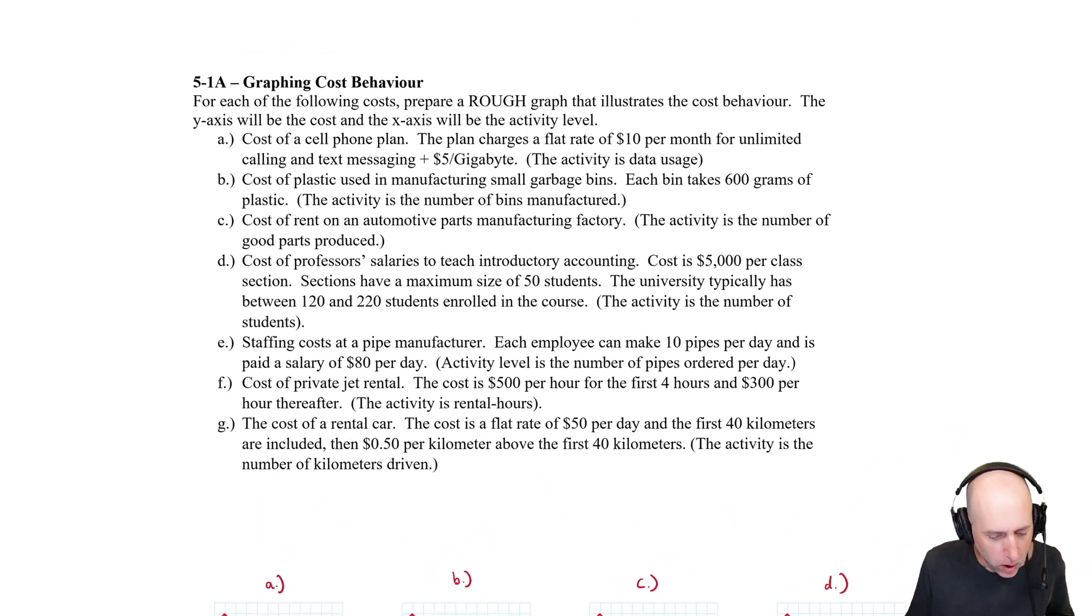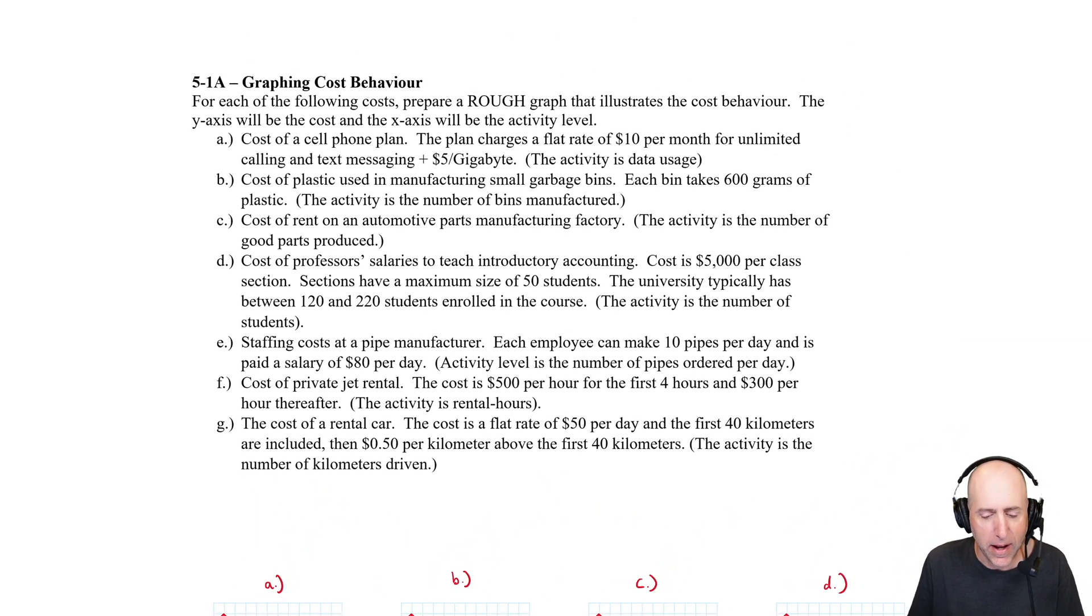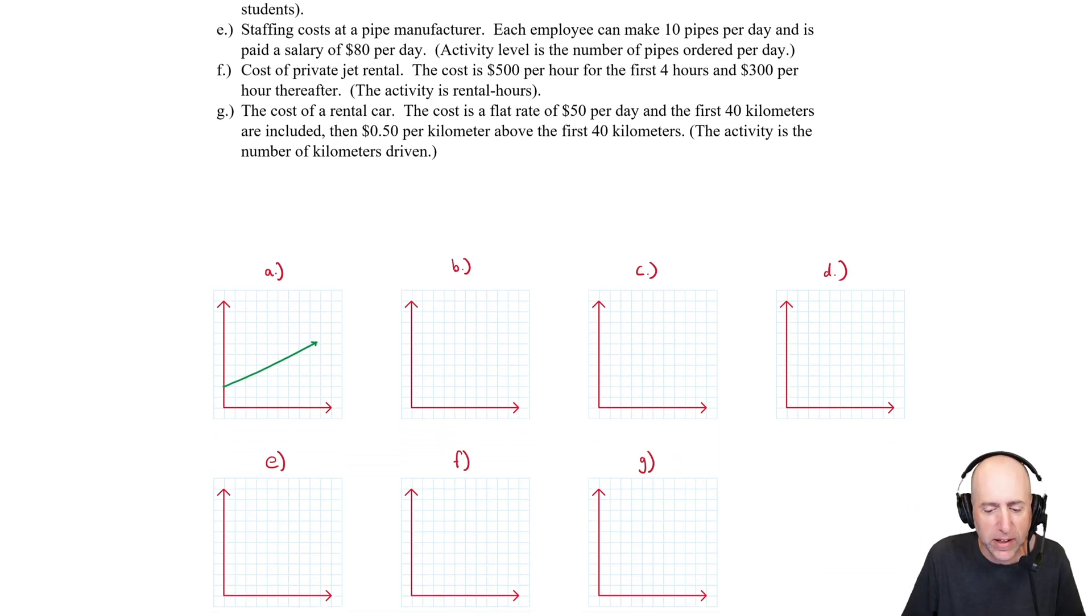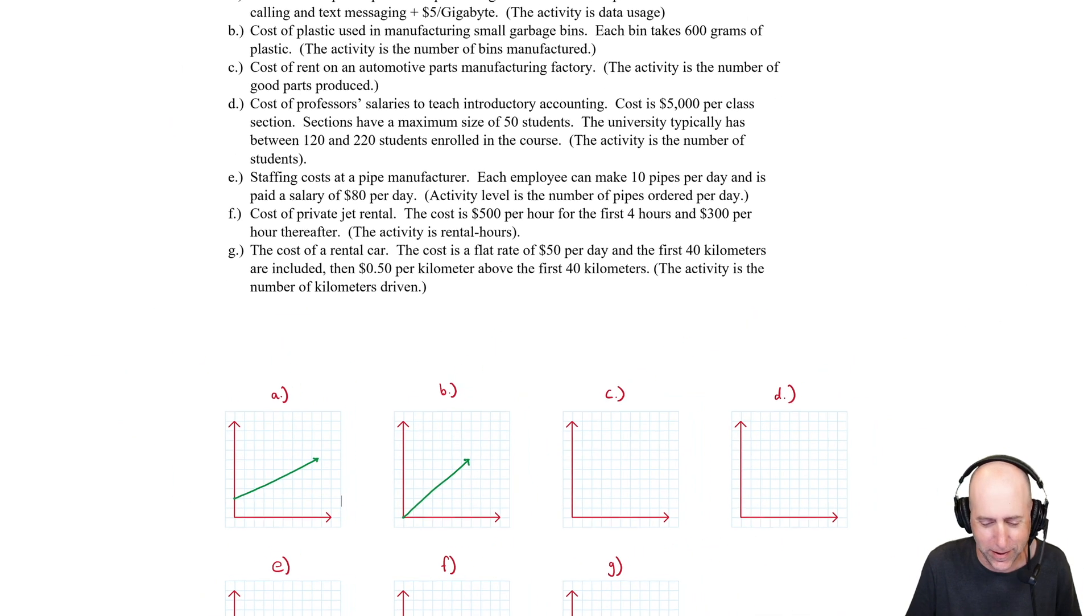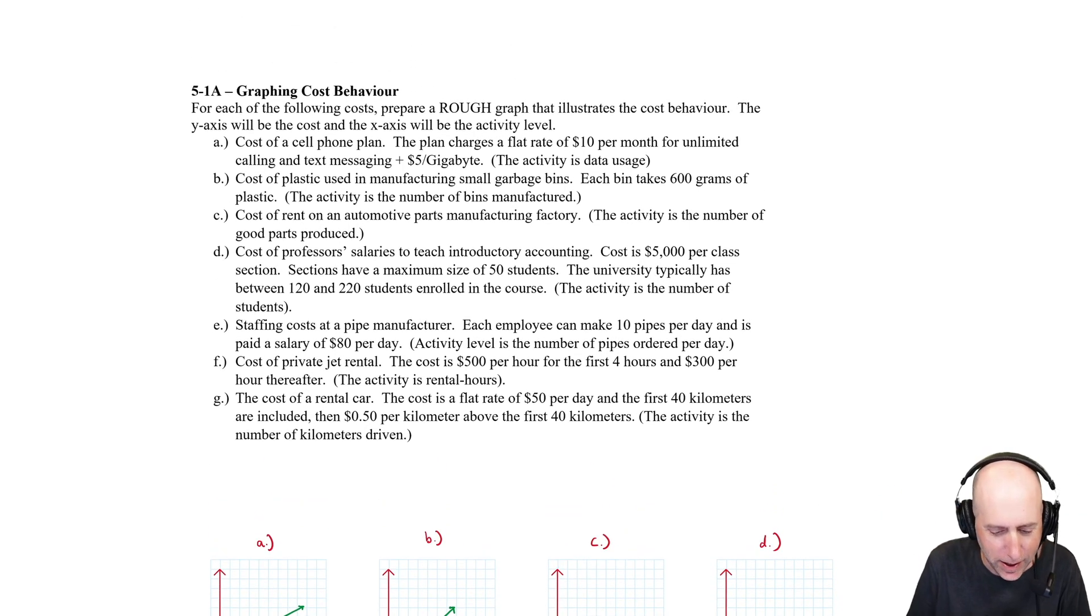Part B: cost of plastic used in manufacturing small garbage bins. Each bin takes 600 grams of plastic. So imagine a little desk garbage can that might be sitting beside a desk. For each bin you need more plastic, and I would think the plastic will be linearly related to the bin. The more bins, the more plastic. If we make zero bins, zero plastic, but it just goes up from there. Now don't compare these two and say oh the slope of this line is steeper than that one. These are just rough graphs. They're meant to sort of just be a high level for you of the cost.